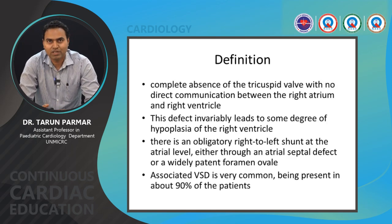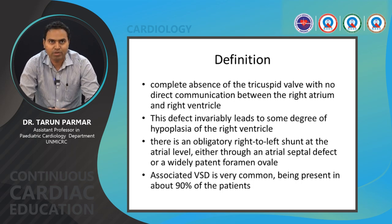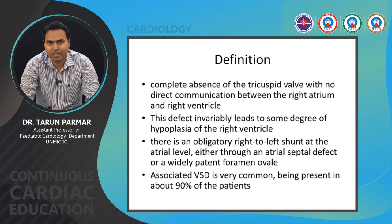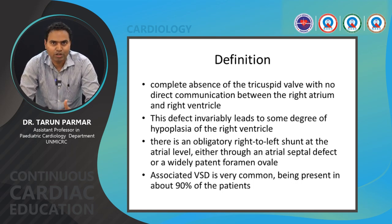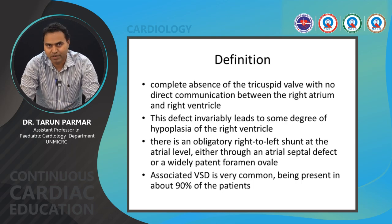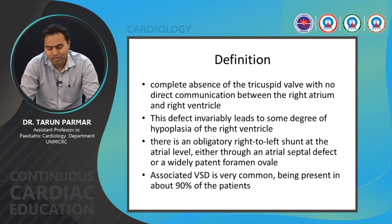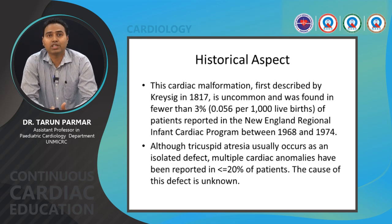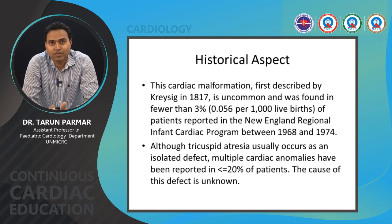By definition, there is complete absence of the tricuspid valve with no direct communication between the right atrium and right ventricle. This defect invariably leads to some degree of hypoplasia of the right ventricle. Most of the time the RV is hypoplastic, and there is an obligatory right-to-left shunt at the atrial level — either a patent foramen ovale or an atrial septal defect. VSD association is present in 90% of patients.